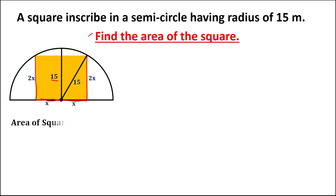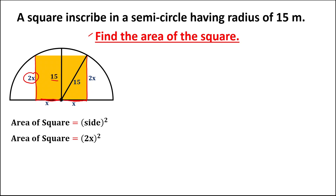To find the area of the square, we use the formula: the square of the side. Since the side is equal to 2x, the area of the square is equal to (2x)². But first, we need to solve for x using this right triangle.